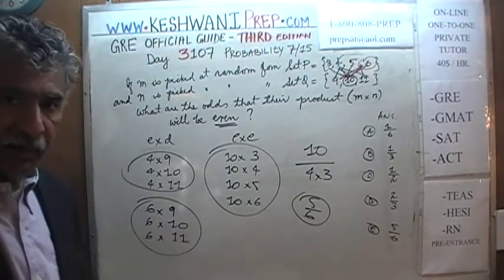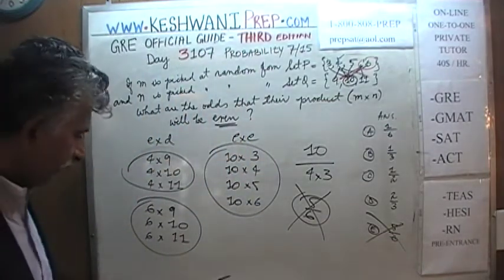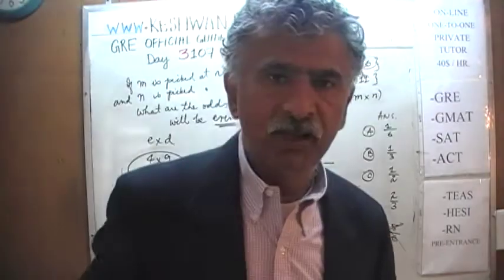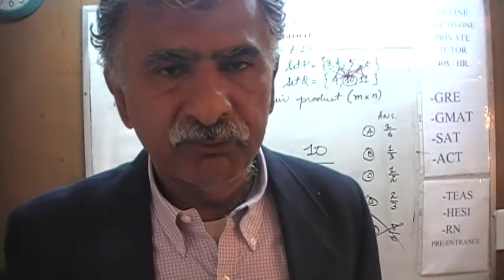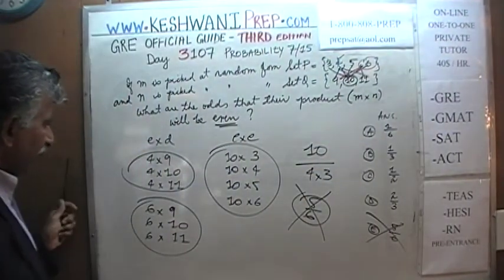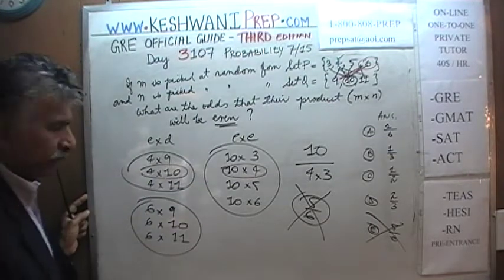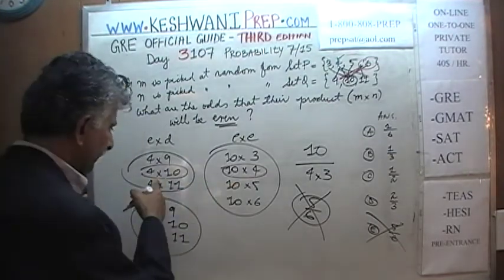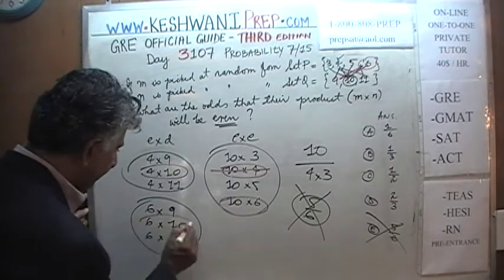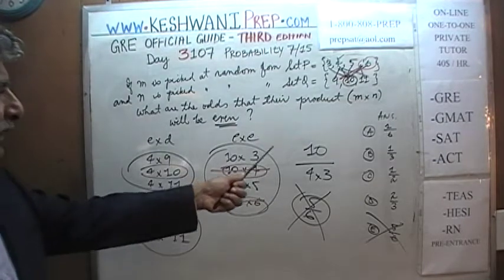But wait — this answer is not correct. This is not a permutation, and order does not matter. It does not matter where the odd or even number came from, whether from set P or set Q. Only the product matters. For example, 4×10 = 40 and 10×4 = 40 — those are not two different products; that's double counting. Similarly, 10×6 and 6×10 both equal 60 — we cannot count that twice. The product must be unique.